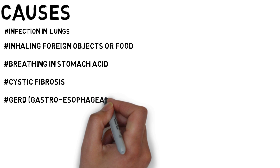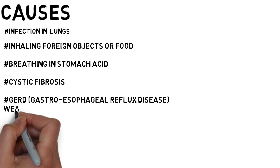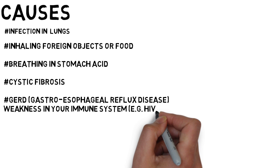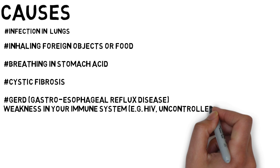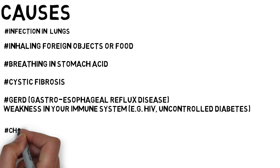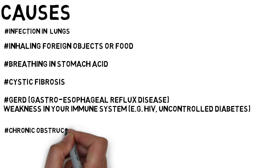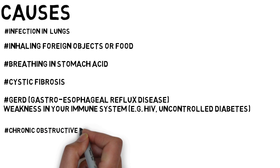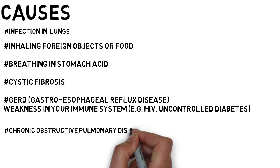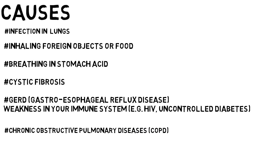Additional causes include weakening of the immune system, e.g. HIV, and uncontrolled diabetes. According to the National Institute of Allergy and Infectious Disease, one third of all cases of bronchiectasis are caused by cystic fibrosis. Chronic obstructive pulmonary disease, chronic bronchitis and emphysema also obstruct the lungs and raise the risk for bronchiectasis.